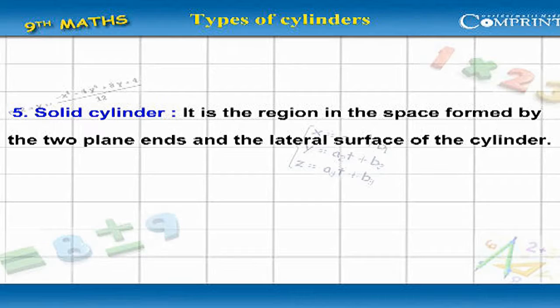A solid cylinder is the region in the space formed by the two plane ends and the lateral surface of the cylinder.